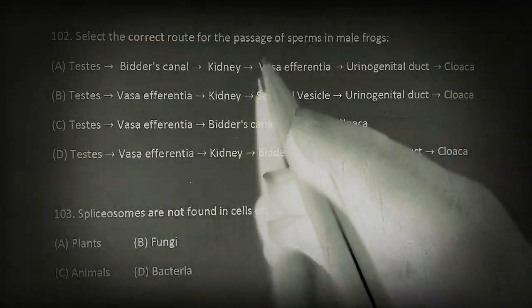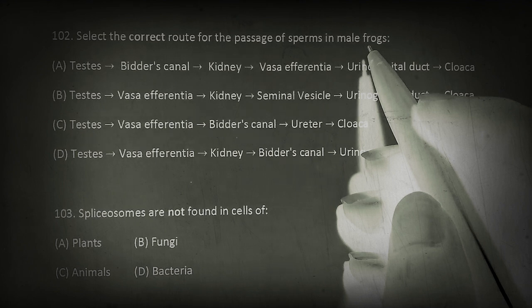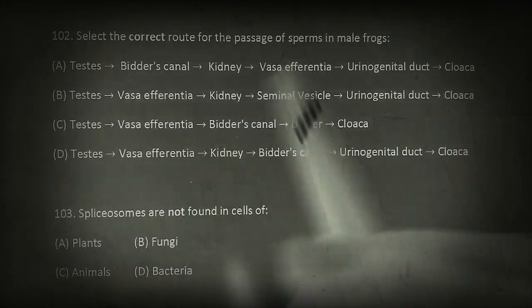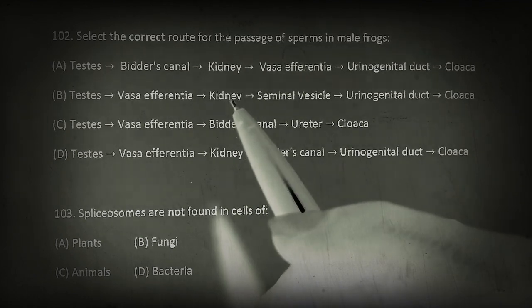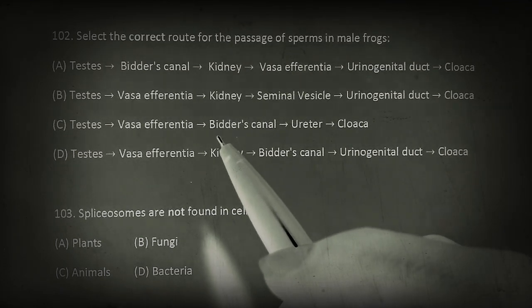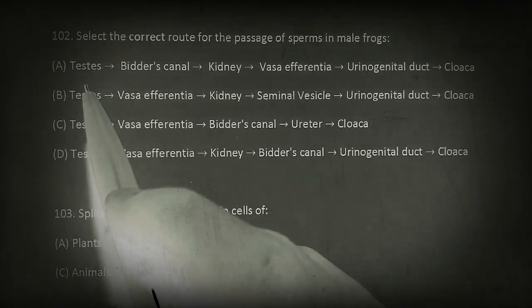Select the correct route for the passage of sperms in male frogs. The correct passage of sperms in male frogs is the testis, then vasa efferentia, then kidney, then Bidder's canal, then urinogenital duct, and then cloaca.